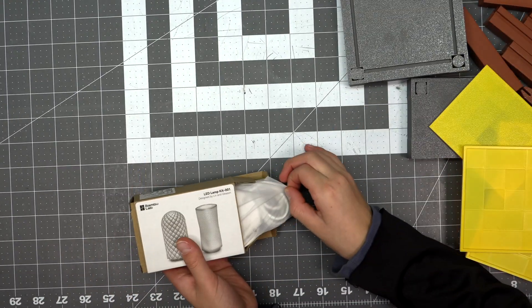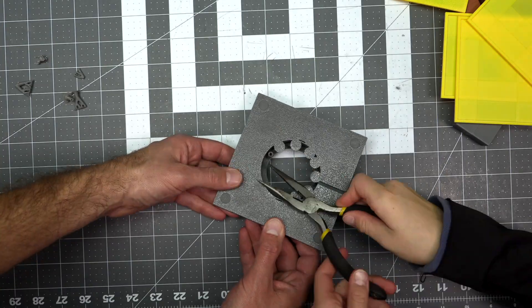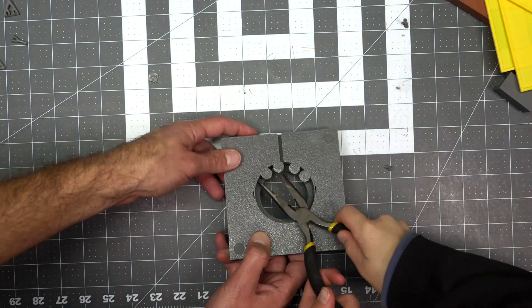Gather all your parts together, including the LED light that you ordered. There's going to be a few tree supports you're going to need to remove, so do that before you start assembling anything.